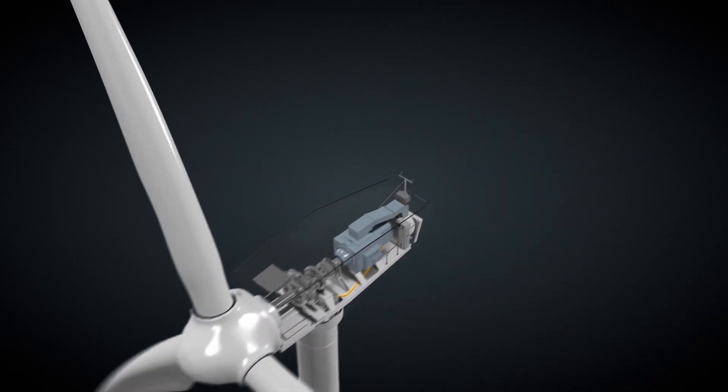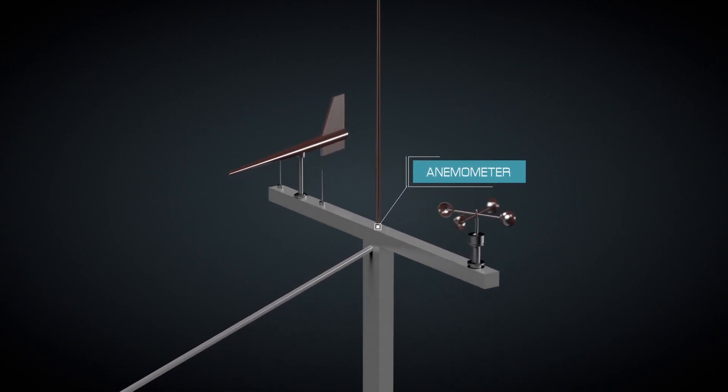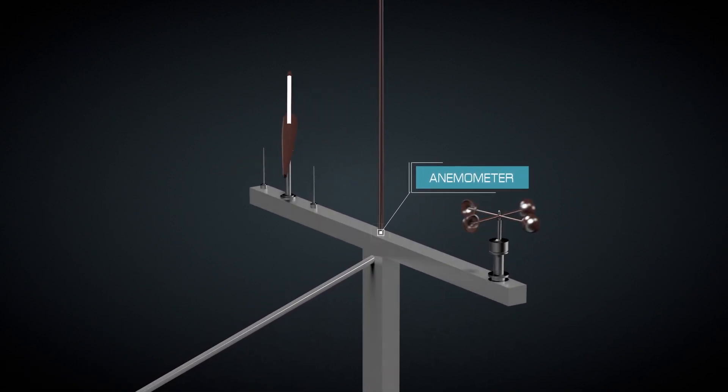These direction changes are registered by an anemometer, which is a device used for measuring wind speed and direction, and is usually located on the top of the nacelle.